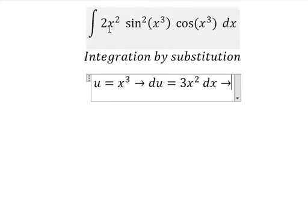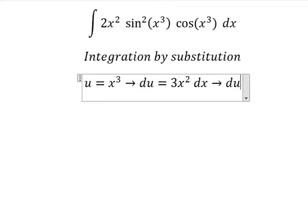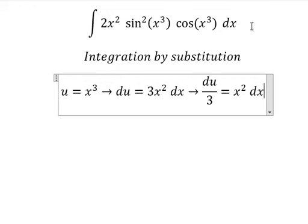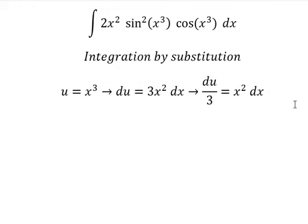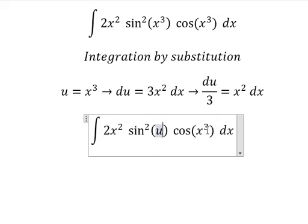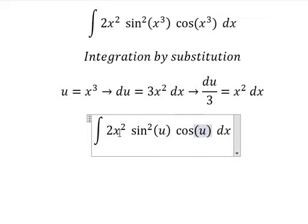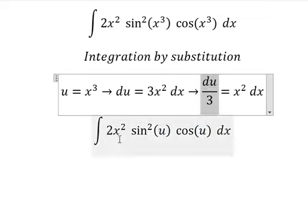Because we don't have the number 3, so we divide both sides by 3. This one we change by u, this one we change by u, and x squared dx we change by this one.